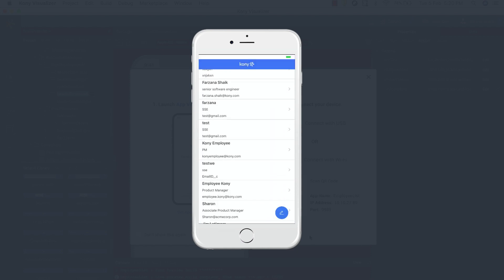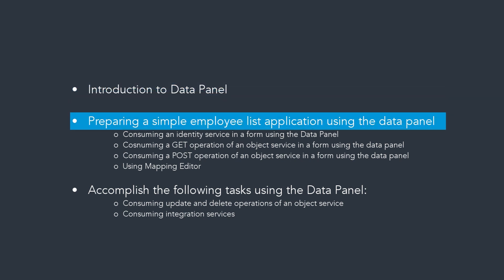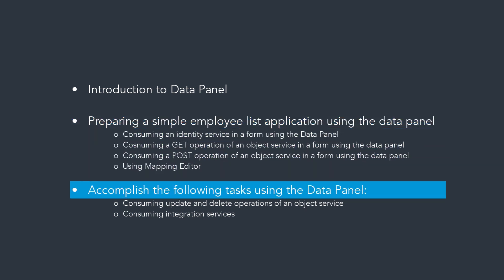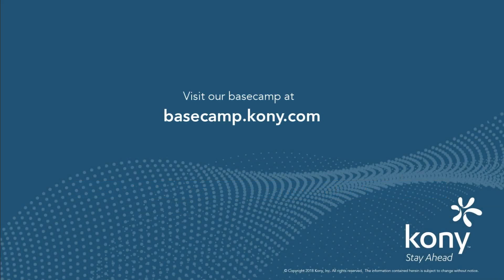Let us recap what we did in this video. We successfully created an Employee List mobile app and covered the following: Introduction to Data Panel, preparing a simple Employee List application using the Data Panel, consuming an Identity Service in a form using the Data Panel, consuming a Get operation of an Object Service in a form using the Data Panel, consuming a Post operation of an Object Service in a form using the Data Panel, and using the Mapping Editor. Apart from the above, one can also accomplish the following tasks using the Data Panel: consuming Update and Delete operations of an Object Service, consuming Integration Services. For further information on Data Panel and other features in Kony Visualizer, visit our Basecamp at Basecamp.kony.com.